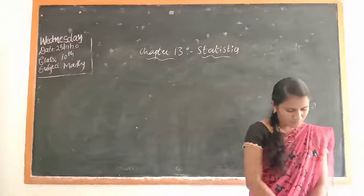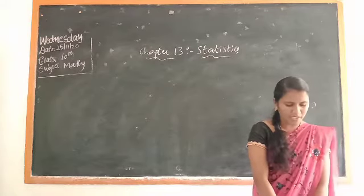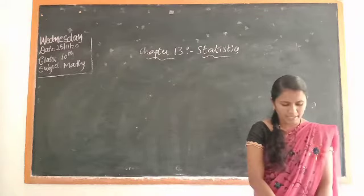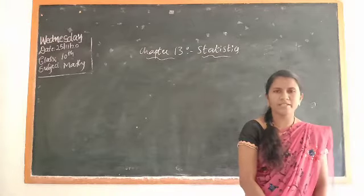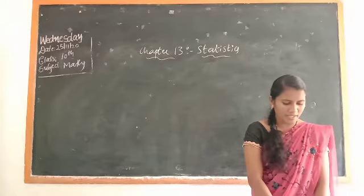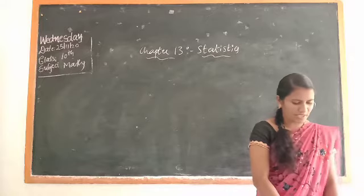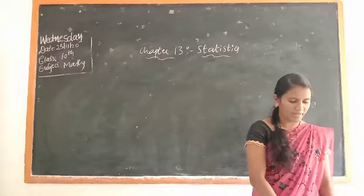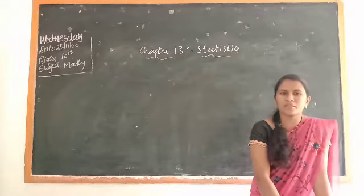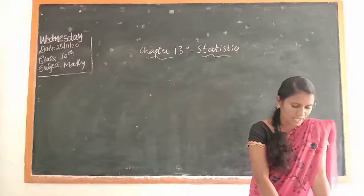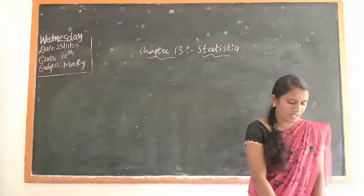Example 1, page number 76. The marks obtained by 30 students of class 10 of a certain school in a mathematics paper consisting of 100 marks. You know already total marks will be 100, are presented in the table below. Find the mean of the marks obtained by the students. I said in last class we are doing the average. Average means here mean.